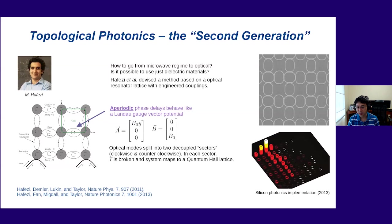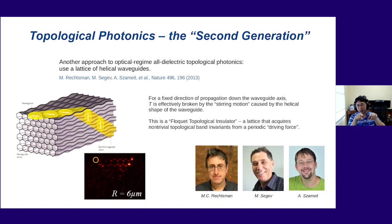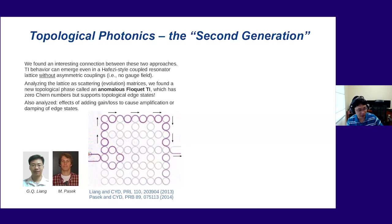The group of Moti Segev and Alexander Szameit figured out a different way: take coupled optical waveguides and give them a helical shape. From the point of view of photons moving down the waveguide, the helical motion looks like a stirring, which is like breaking time-reversal symmetry — creating a photonic topological insulator. By this time I had graduated MIT and was working at Yale on non-Hermitian photonics. Around 2012–2013 I came back to NTU to start a group and got back into topological photonics, which I had worked on as a graduate student.